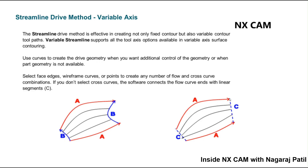Sometimes if you want to limit the toolpath to a certain position, you need to draw a line and consider it as a flow curve. In the left side image you can observe the red color lines are the flow curves and the blue color lines are the cross curves. You can see the difference in the resultant toolpath between using both flow and cross curves versus using only the flow curve.